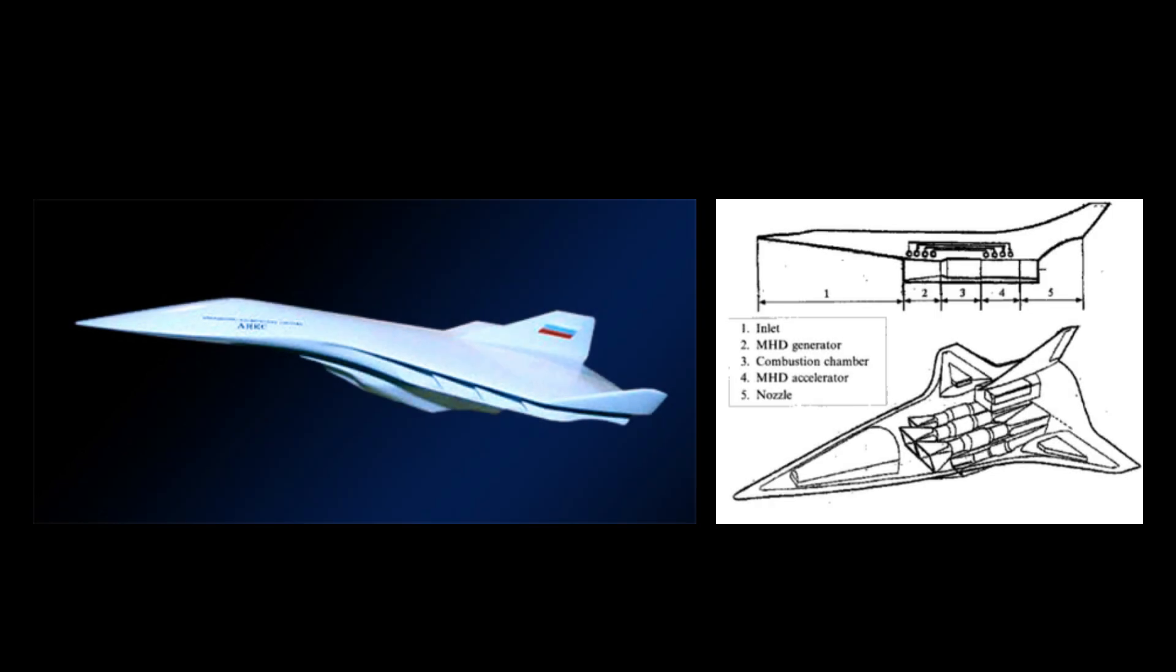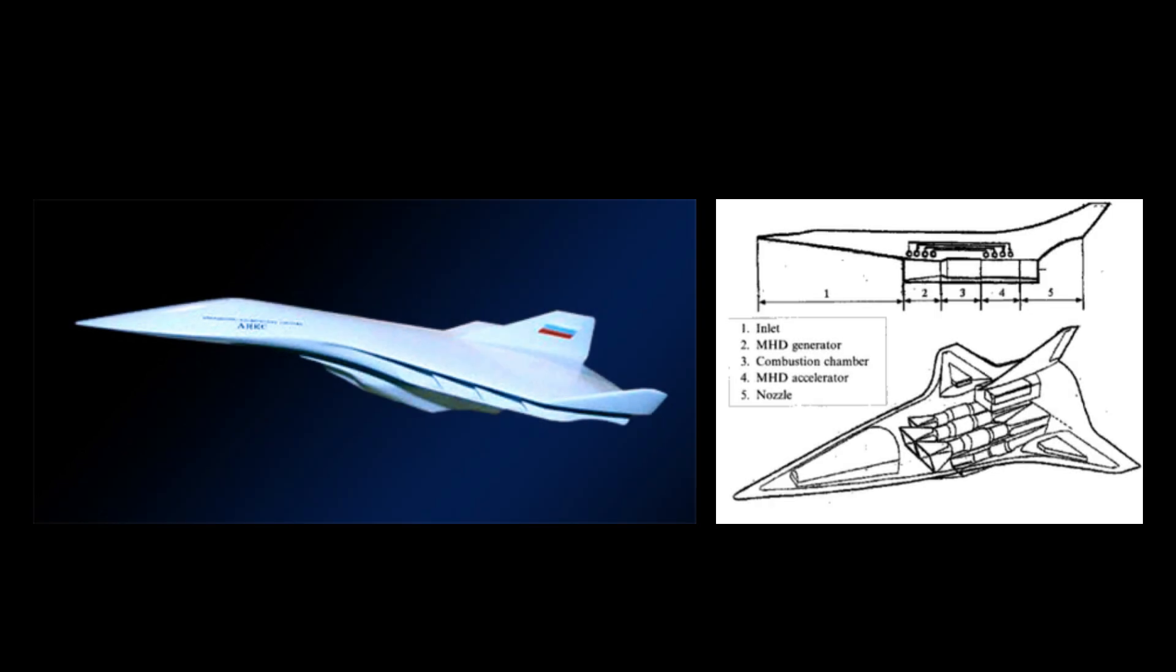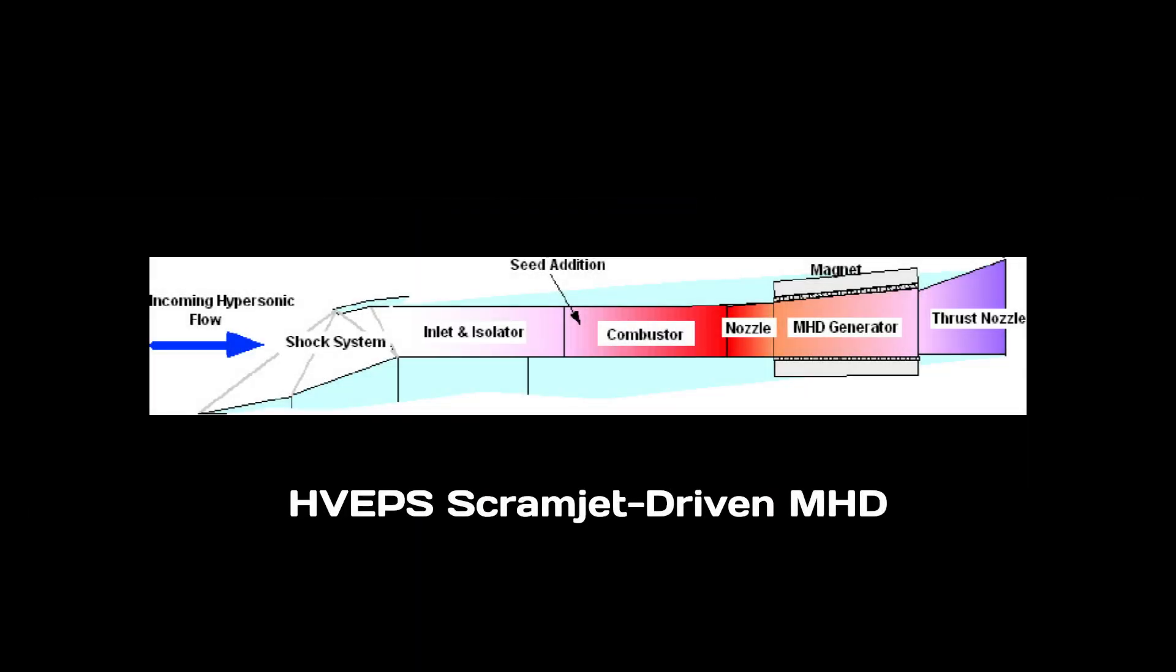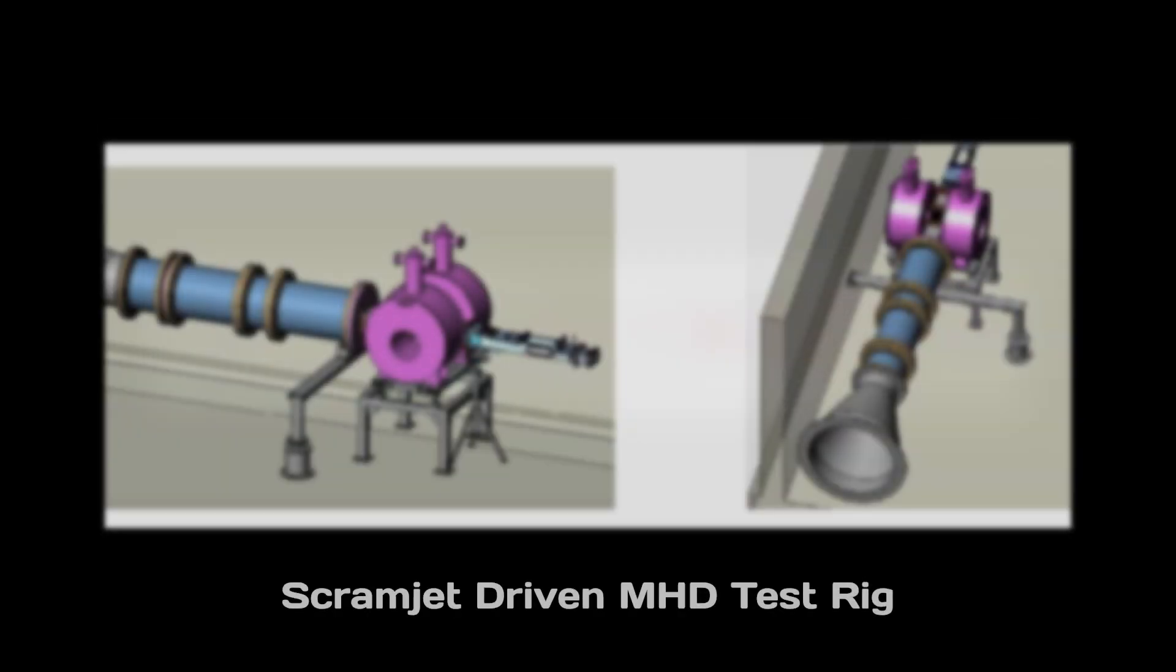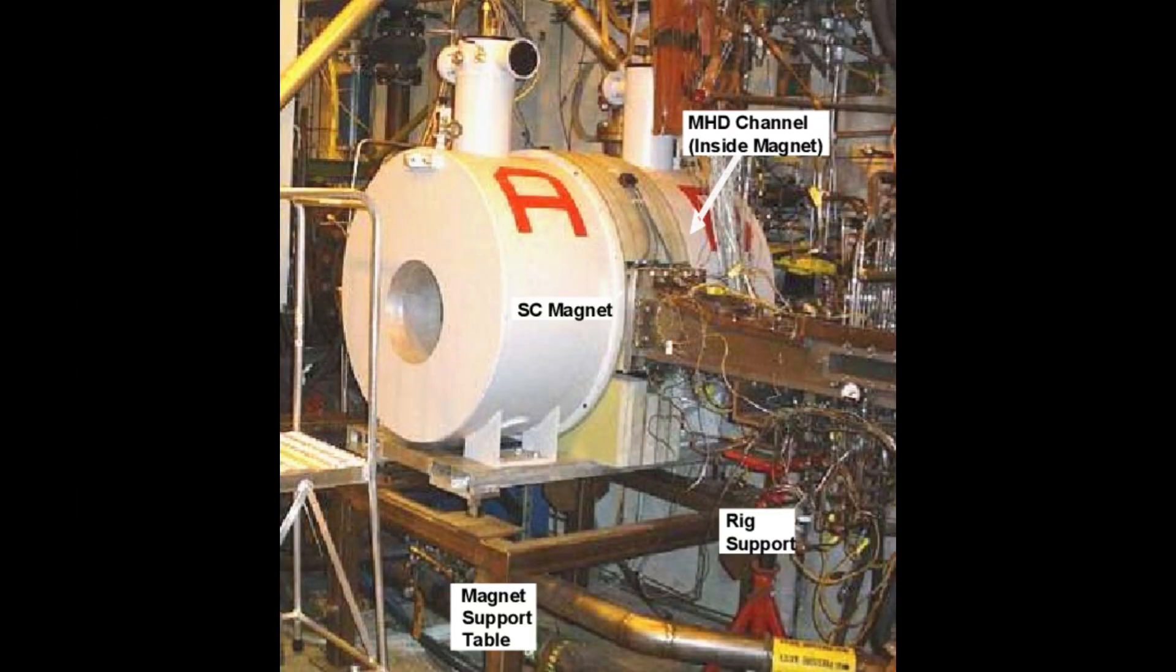The Russian project Ajax is an example of MHD-controlled hypersonic aircraft concept. A U.S. program also exists to design a hypersonic MHD bypass system, the Hypersonic Vehicle Electric Power System. A working prototype was completed in 2017 under development by General Atomics and the University of Tennessee Space Institute, sponsored by the U.S. Air Force Research Laboratory.